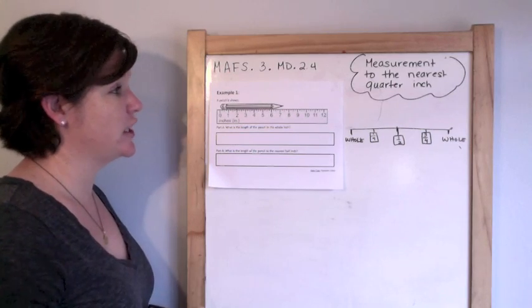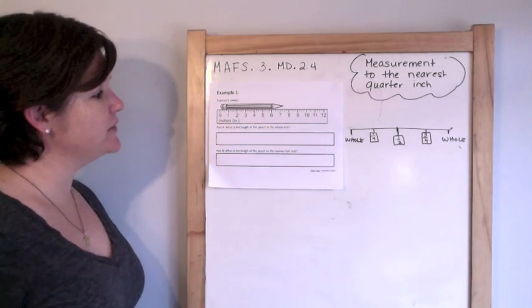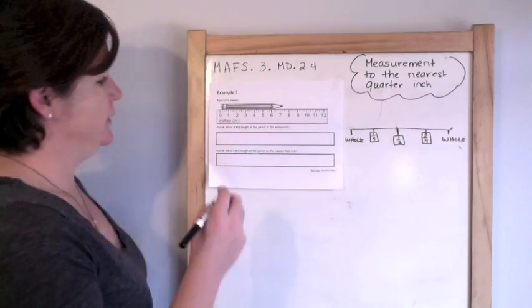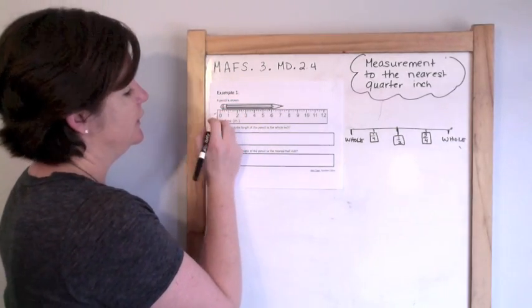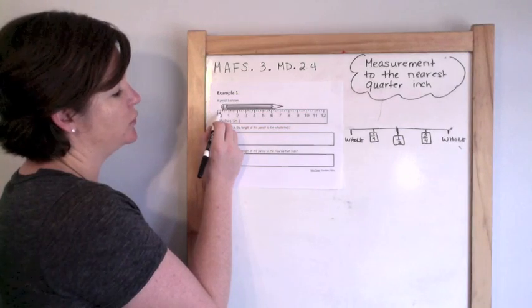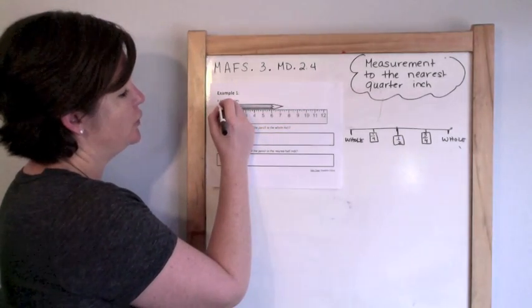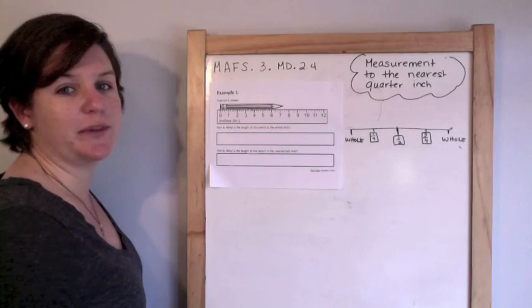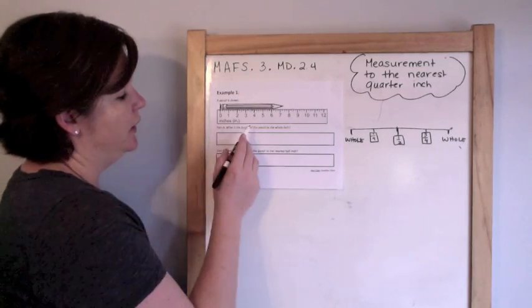So let me teach you. Example one: A pencil is shown. Just so you know, they give you a little bit of extra space right there between the start of the ruler and the zero. But just know that my eraser is lining up perfectly with that zero.